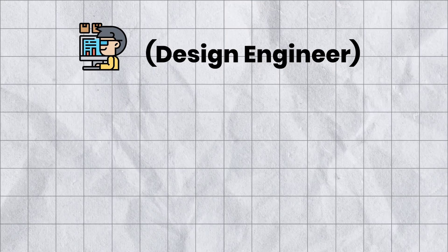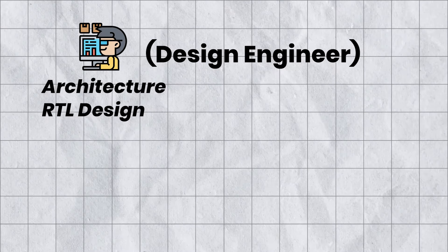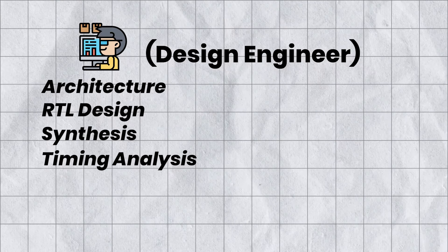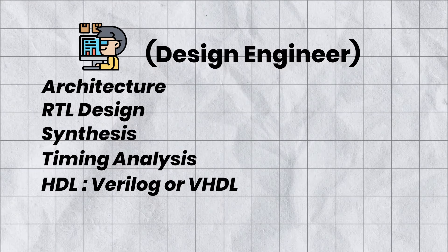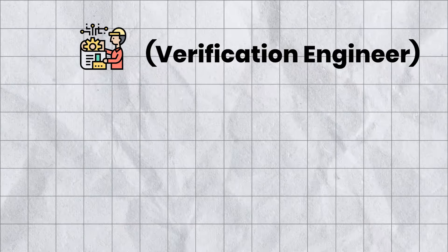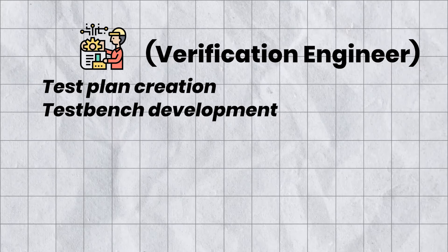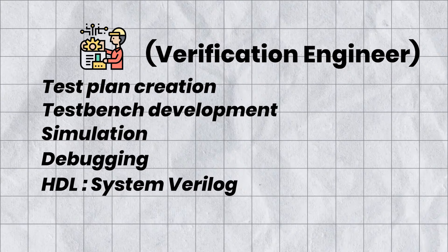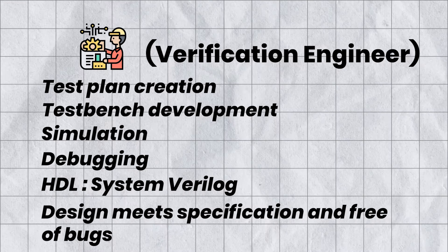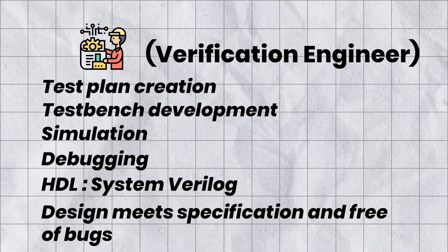A verification engineer's role complements the design engineer's work by providing rigorous testing, validating the framework, and catching errors not evident in the initial design phase. A design engineer is responsible for architecture, RTL design, synthesis, and timing analysis using HDLs like Verilog or VHDL. A verification engineer is responsible for test plan creation, test bench development, simulation, and debugging, using HDLs and verification languages like SystemVerilog, focusing on ensuring the design meets specifications and is free of bugs.